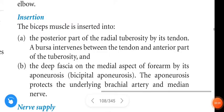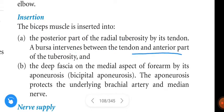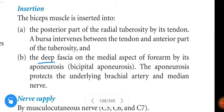Next, insertion of the biceps brachii: the biceps muscle is inserted into the posterior part of the radial tuberosity by its tendon. A bursa intervenes between the tendon and the anterior part of the tuberosity. The deep fascia on the medial aspect of the forearm is attached by the bicipital aponeurosis.